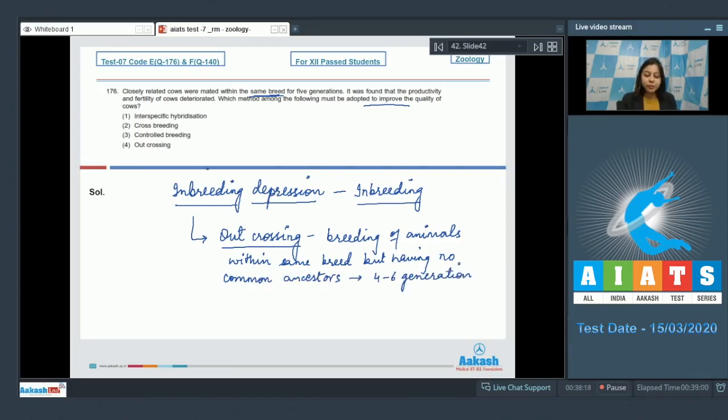So the correct answer will be option number four. Let us see the other options. Number one, interspecific hybridization—this is incorrect as interspecific hybridization is breeding between animals of two different species. Number two, cross-breeding—this is also incorrect as cross-breeding refers to breeding of animals of different breeds.